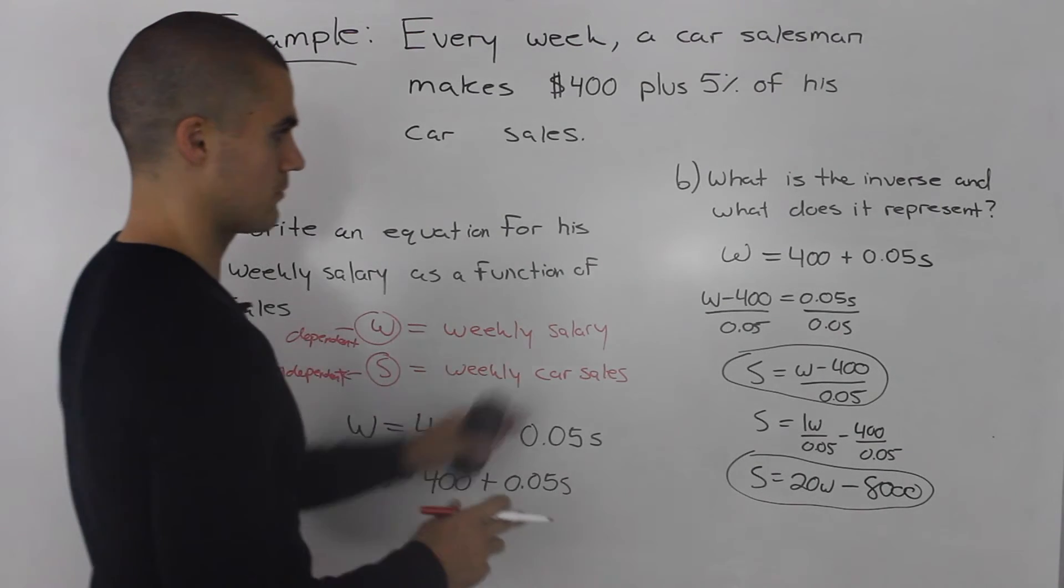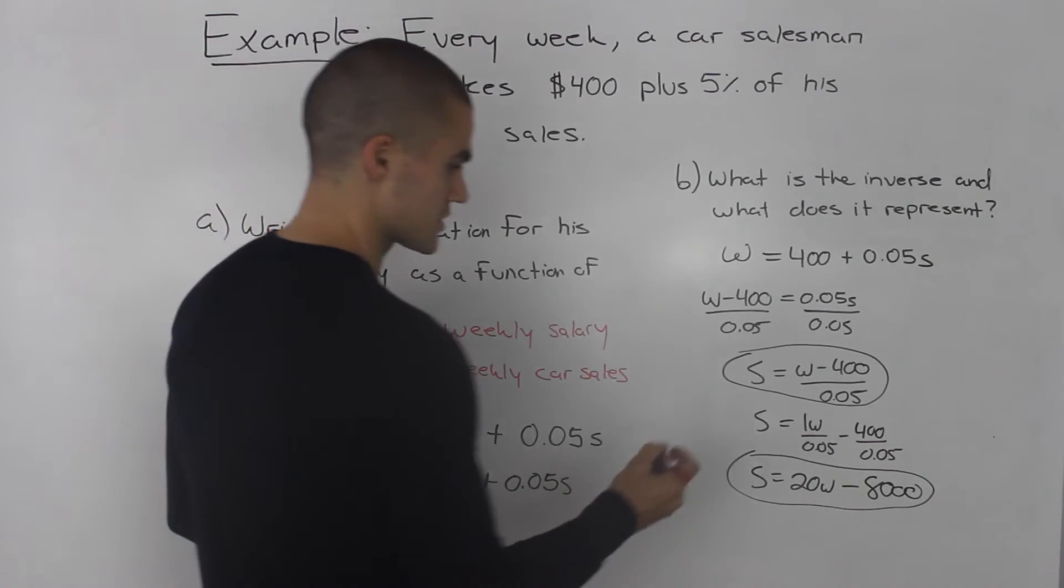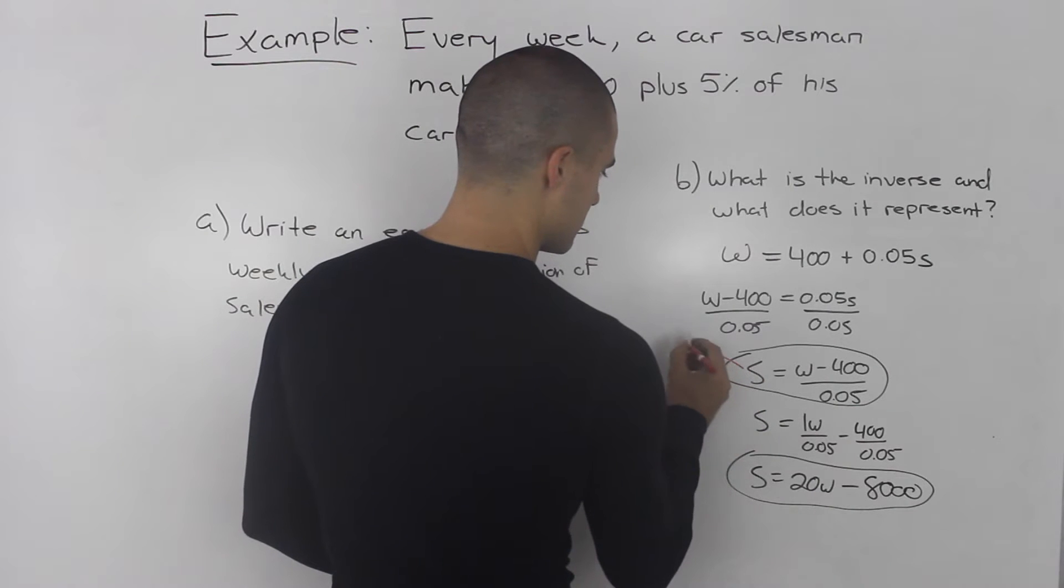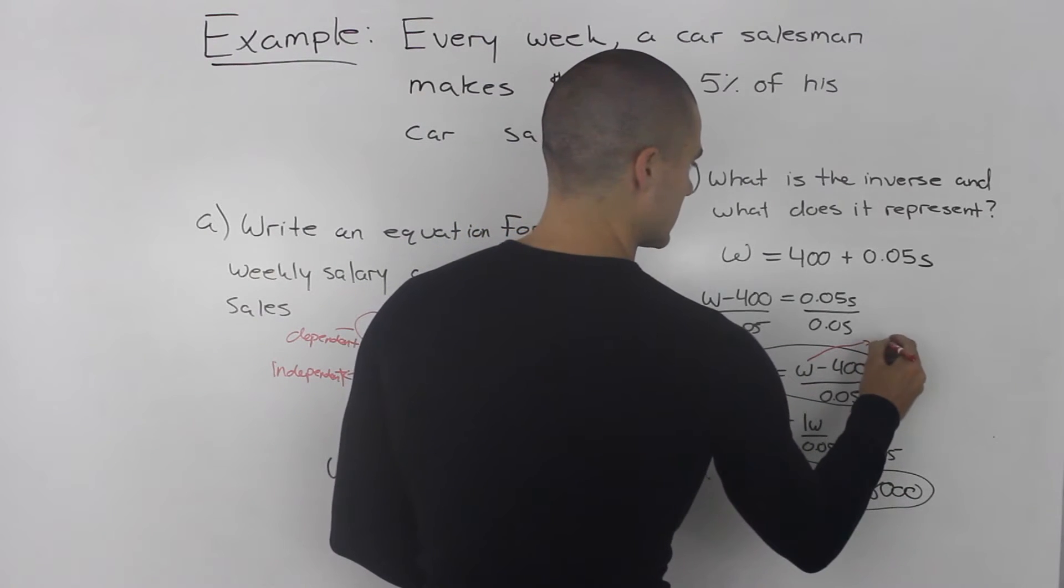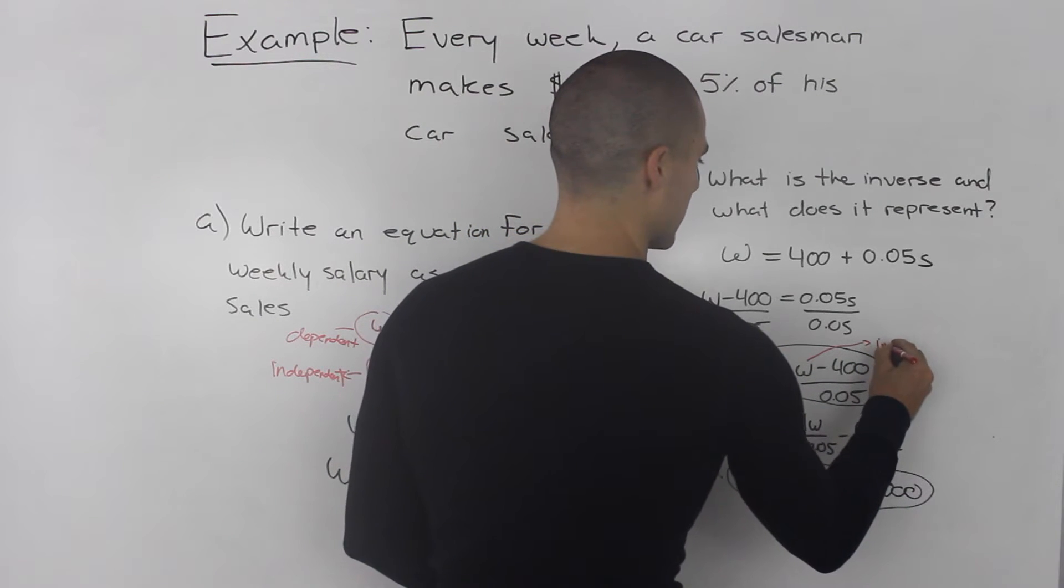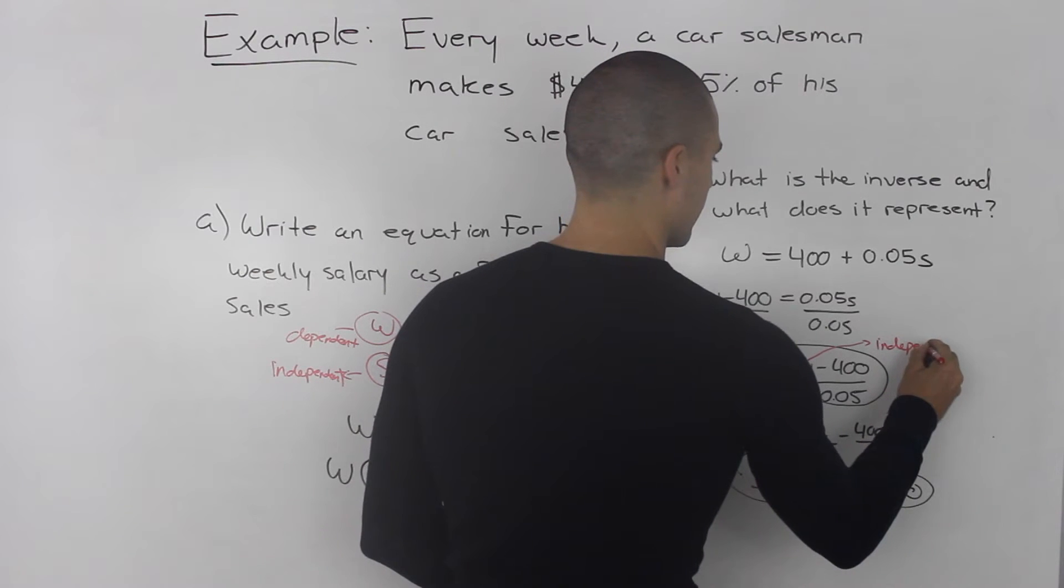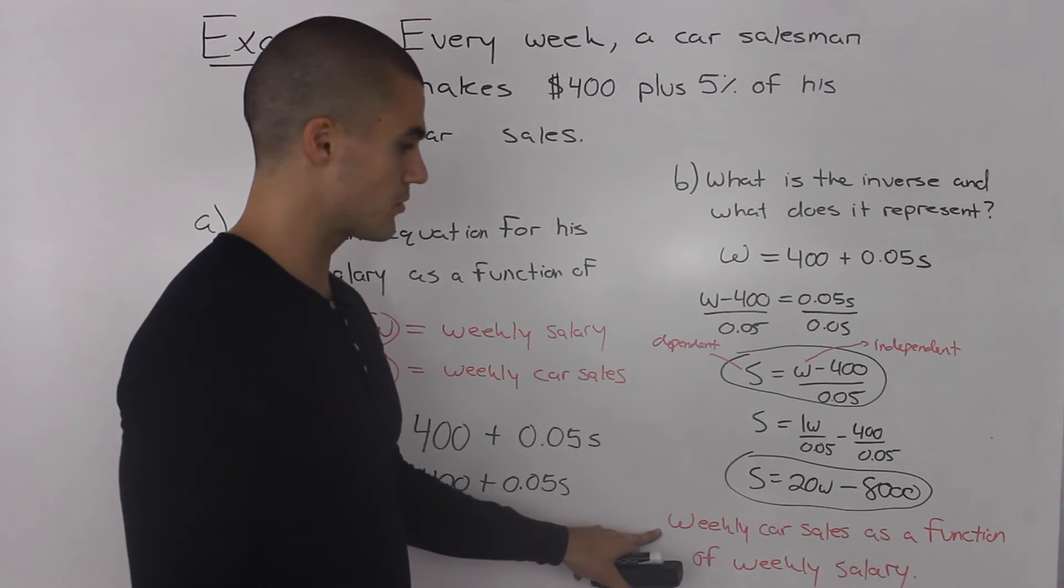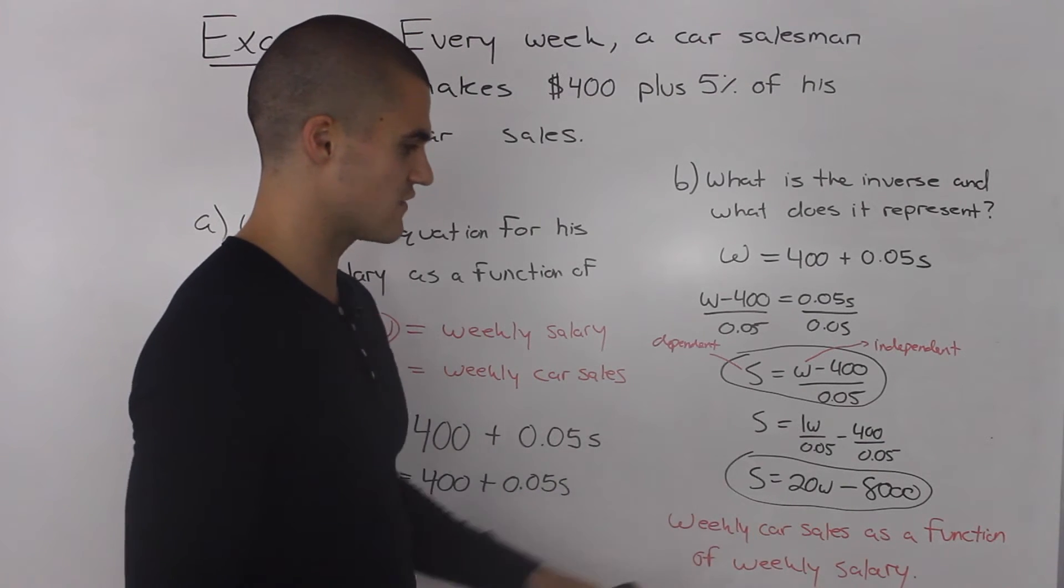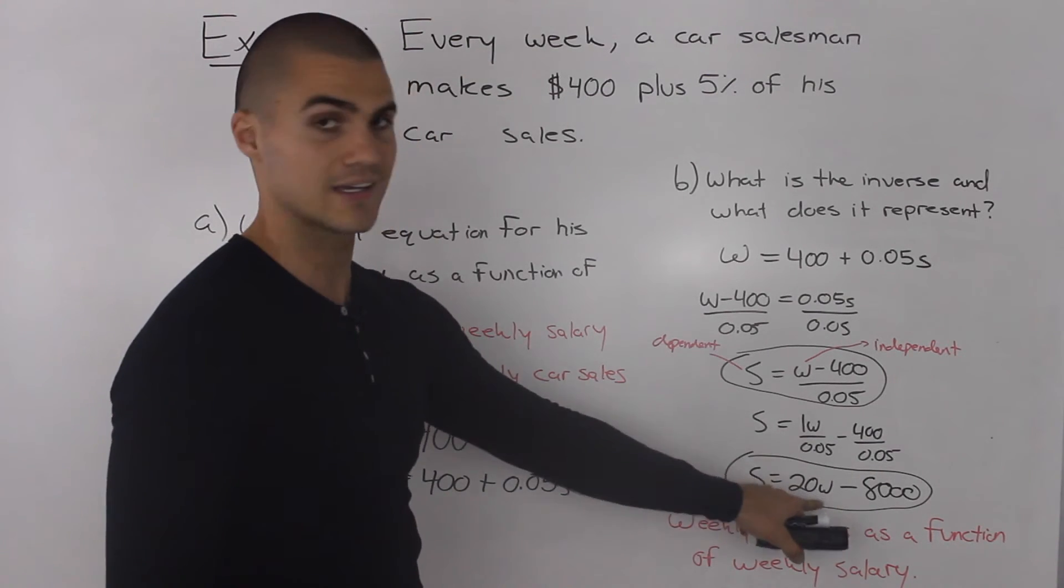However, in part B, once we found the inverse, the S became the dependent variable. And the W, the weekly salary, became the independent variable. So the inverse represents the weekly car sales as a function of the weekly salary.